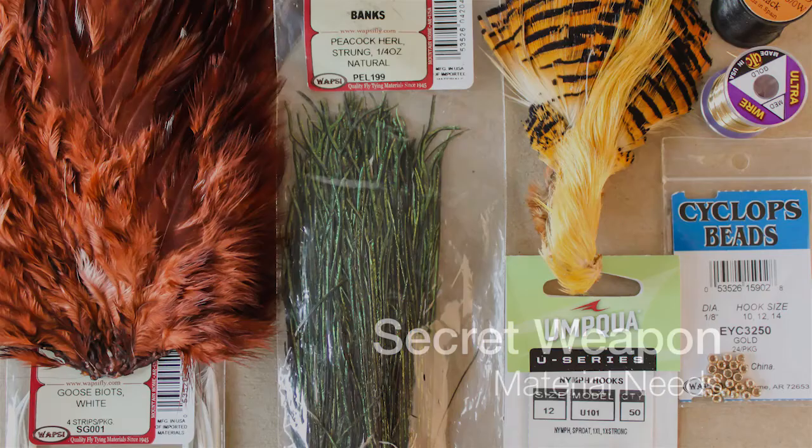For your secret weapon, you'll need a 1X extra long nymph hook, gold beads 1/8th, gold wire medium size, black thread 6-ought, golden pheasant tippet, peacock hurl, white goose biots, and brown hen neck.